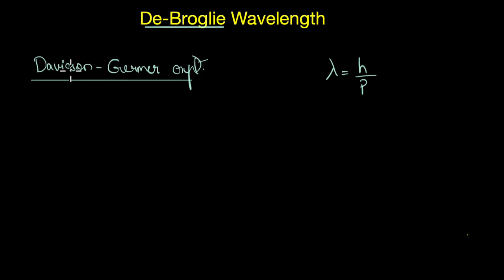So to explain briefly, two scientists named Clinton Davison and Lester Germer were experimenting with a beam of electrons and a nickel target. They were basically firing a beam of electrons at a nickel target and observing how the electrons were scattered.